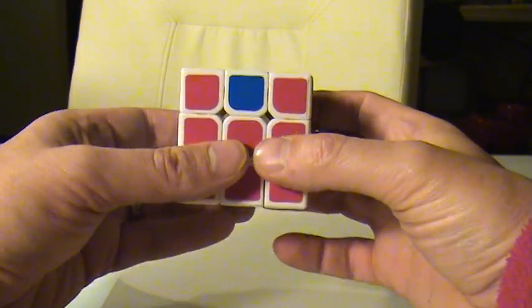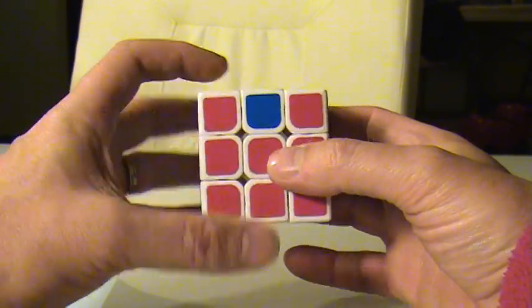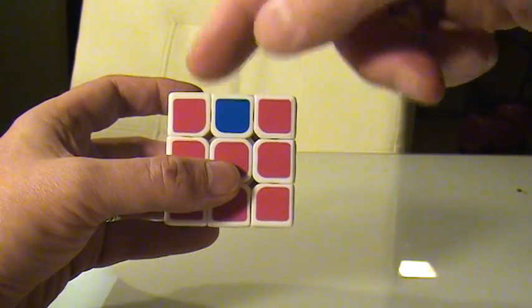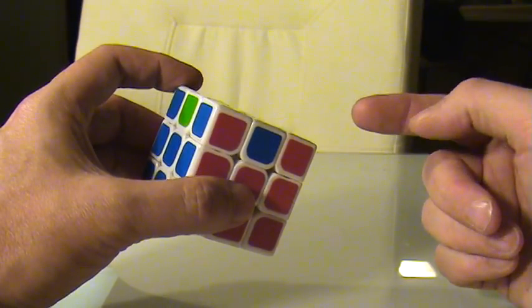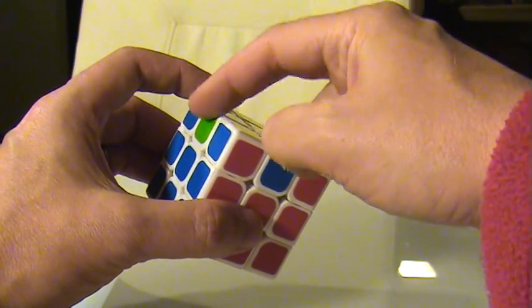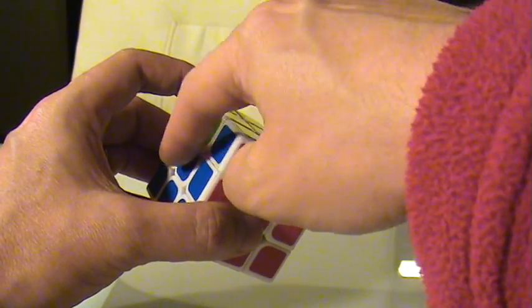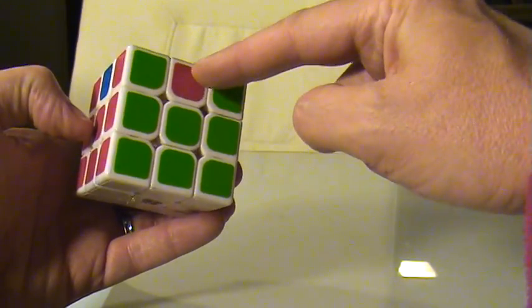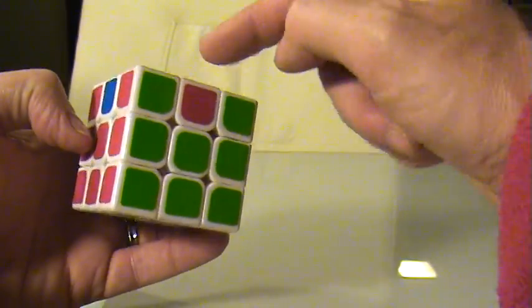What's going to determine whether I do the right-hand version of this or whether I do the left-hand version is which of the pieces is in its opposite position. So in this case, if you look, the green piece is in its opposite position because opposite from the blue center is the green center. If you look at the other side, this piece is not on the opposite.